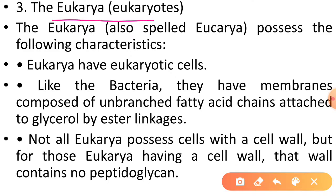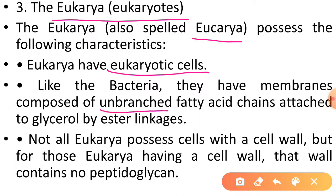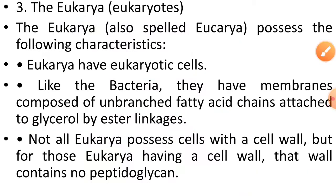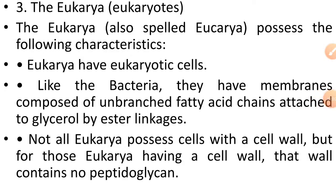Teesra domain Eukarya hai — yeh eukaryotes hain. The Eukarya also spelled Eukera, possesses the following characteristics: Eukarya have eukaryotic cells. Like bacteria, they have membranes composed of unbranched fatty acids attached to glycerol via ester linkages. Not all Eukarya possess cells with a cell wall, but for those Eukarya having a cell wall, that wall contains no peptidoglycan. Jaise Fungi mein cell wall chitin se bani hoti hai, aur Plants mein cell wall cellulose se bani hoti hai.